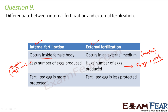In external fertilization the eggs are not well protected — some are eaten by other animals, some get destroyed due to adverse climatic conditions, so fewer eggs survive. In internal fertilization, even though only one egg is produced, it is well protected inside the body, so the chances of destruction are very low. The fertilized egg and the zygote remain protected as development takes place, whereas in external fertilization the fertilized egg is also less protected and the risk is much higher.